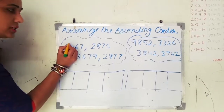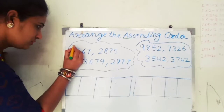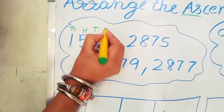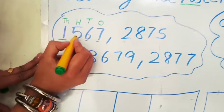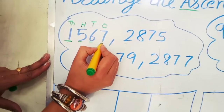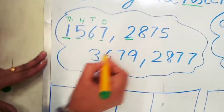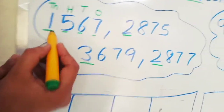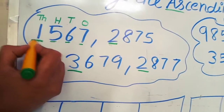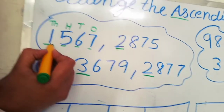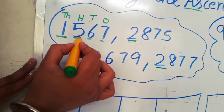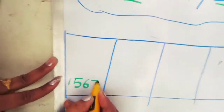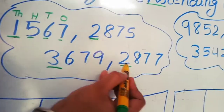We check the four-digit numbers. First of all we check thousands, then hundreds, tens, ones. The thousands digits are: one, two, three, two. The smallest number is one, so the number with one in the thousands place — one thousand three hundred twenty-two — is the smallest number. We write it down first.